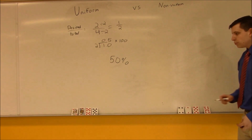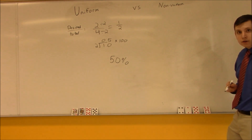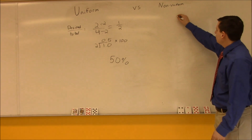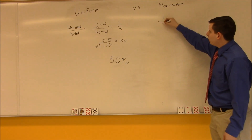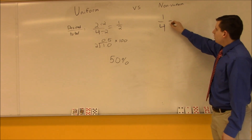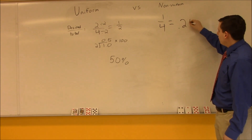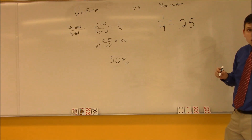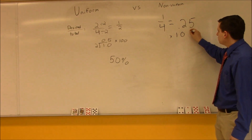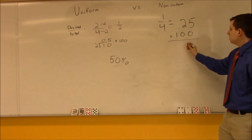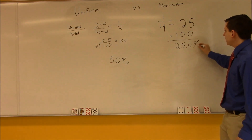Now looking at the non-uniform probability: what is the probability of choosing a black card? There is one black card out of four cards total, so using desired over total, it's one over four, which equals 0.25. Multiplying that times 100 equals 25.0 percent.